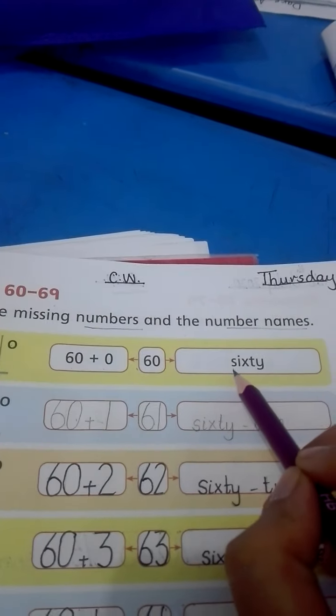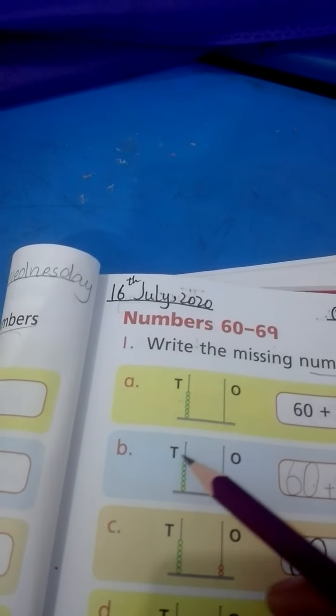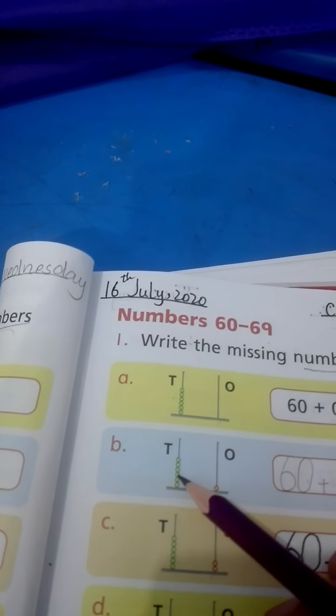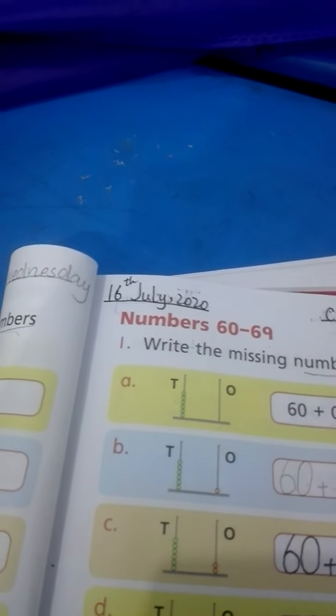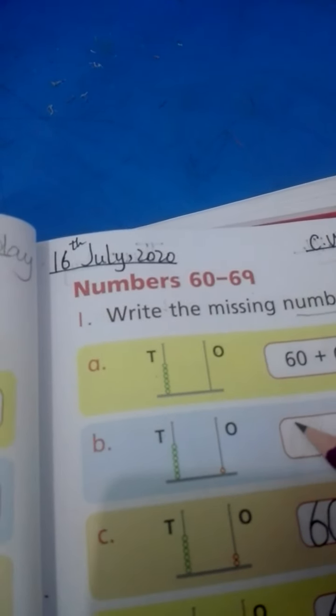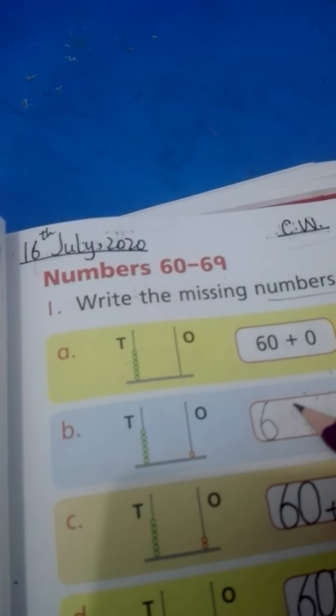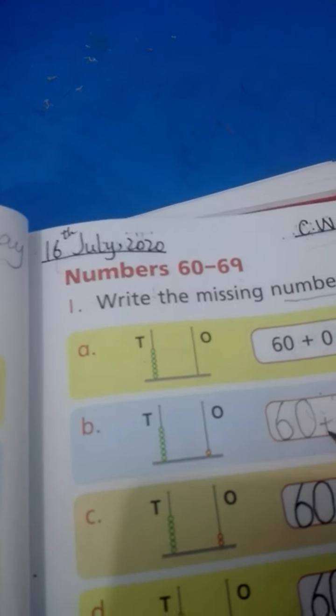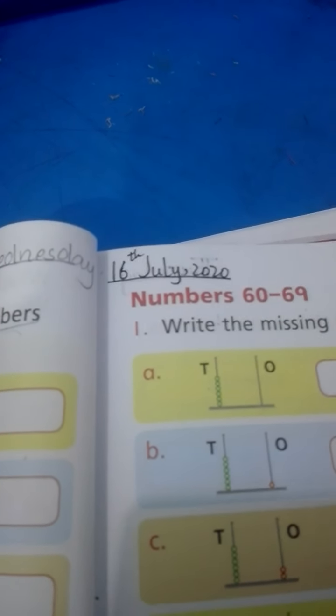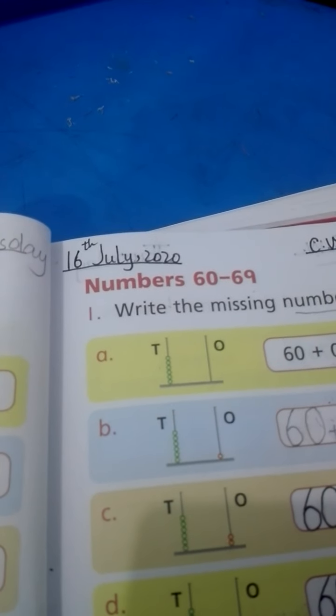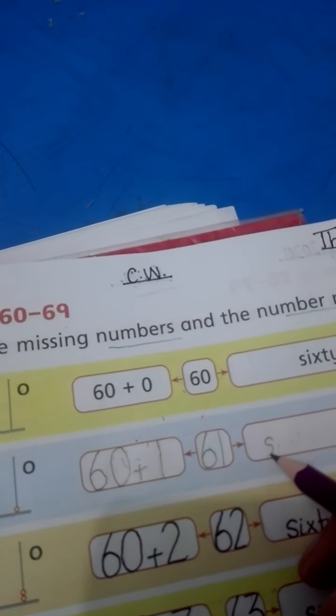We have to write this in number names, so in the line we'll write in small letters: S-I-X-T-Y (60). Question B: count tens beads - 10, 20, 30, 40, 50, 60. Write 60 in the box, addition sign. Now count ones beads: one bead in ones, so we write 1. 60 plus 1 equals 61.